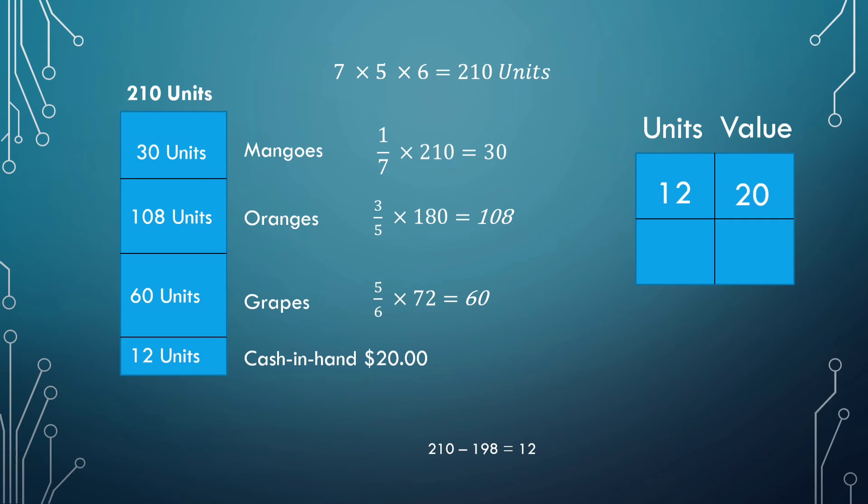We were given that 12 units is equivalent to a $20 value. Now, what we want to know is how much he had initially or from the beginning. From the beginning, they had 210 units. But what cash value is that?